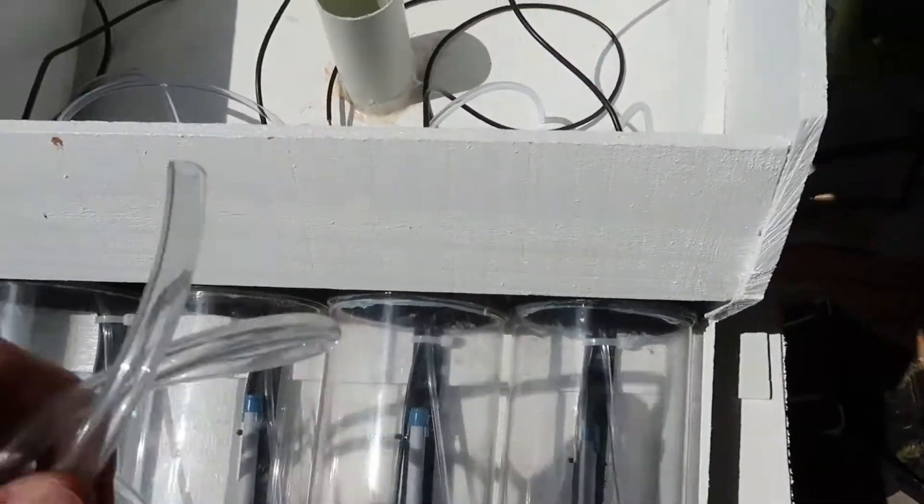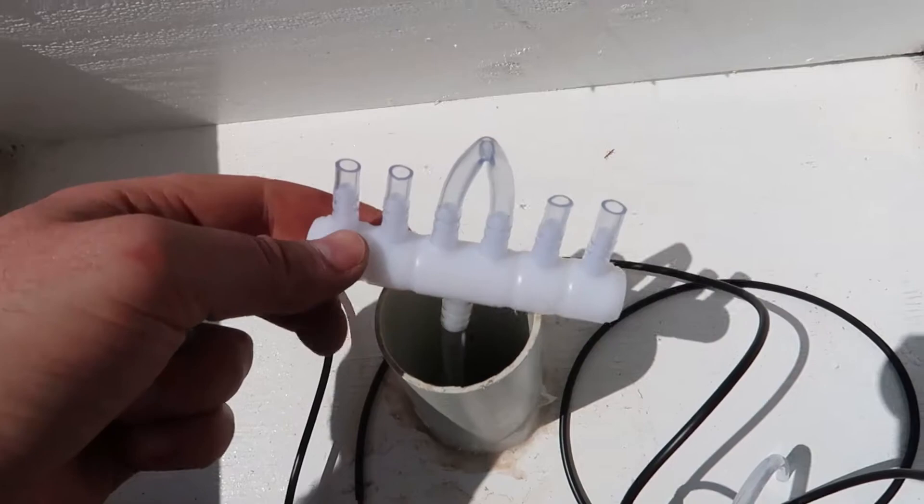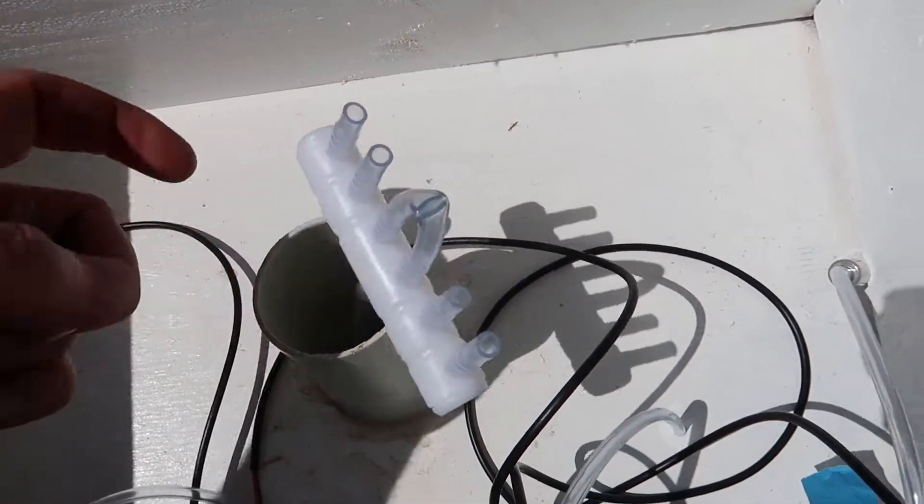Now we're going to run the hose from the air pump up through into that top section. So I'm going to run that down through the pipe. One end we're going to attach to the air pump and then the other end we've got to this diverter or I guess a splitter.